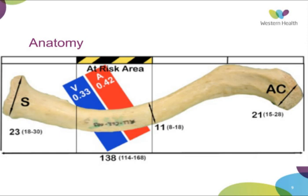The subclavian vein is the most medial, and this diagram shows the position of the subclavian vein as a proportion of the total length of the clavicle. Approximately one-third of the length of the clavicle, you'll find the subclavian vein. It also sits closest in the superior-inferior plane, approximately five millimetres below the bone. In aberrant anatomy, it may be adjacent to the periosteum, such as in the case of clavicle non-unions.